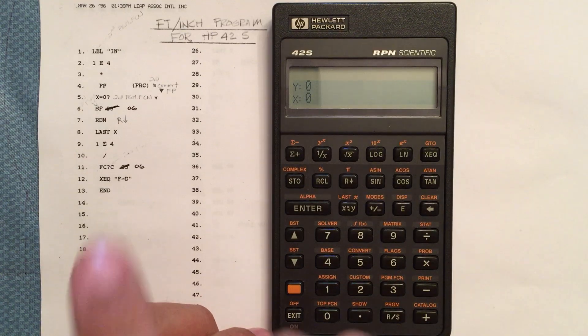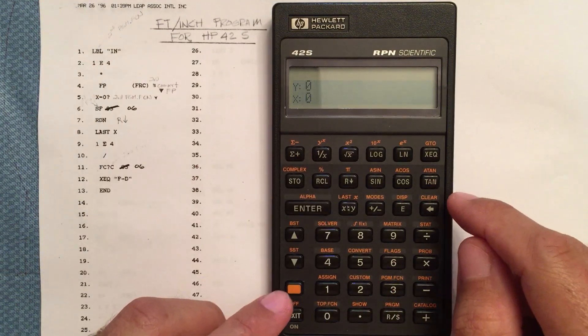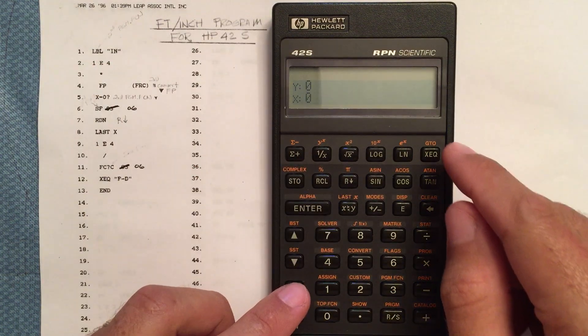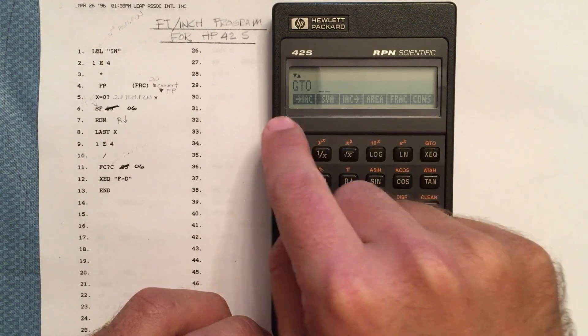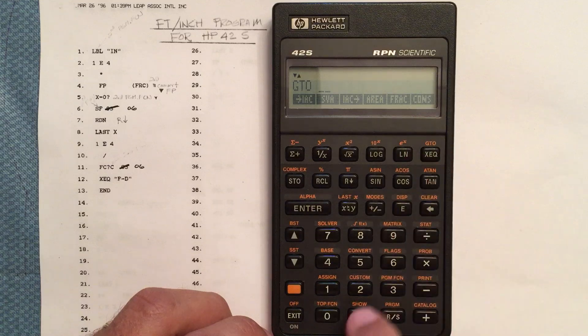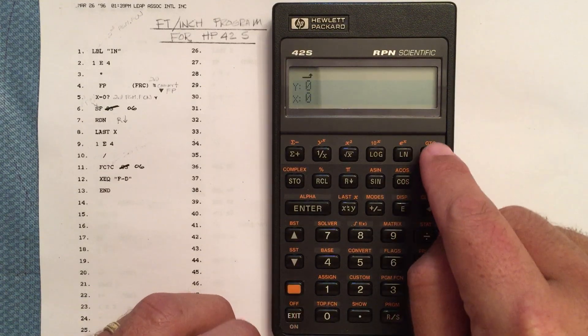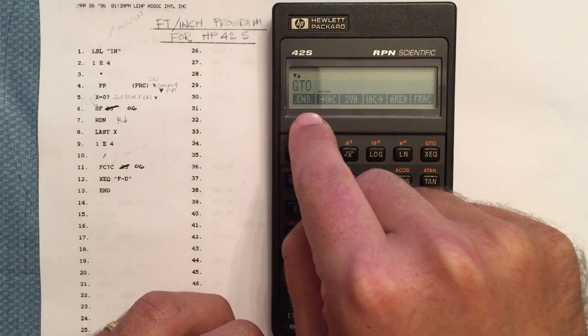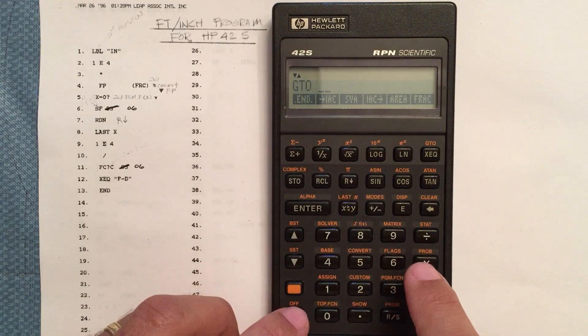So this program starts with the label inch. We're going to create a new program space first. If we go here, do the go to, we can see programs that we've already got, but we want to create a new one. So we'll just hit the decimal point twice. Now if we go to again, you'll see we've created a new one that just has end in it. There's nothing in it. It's empty.